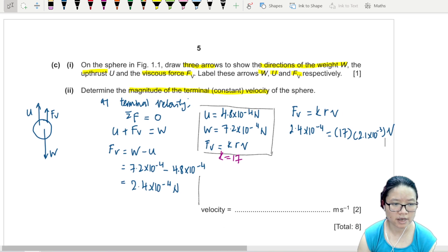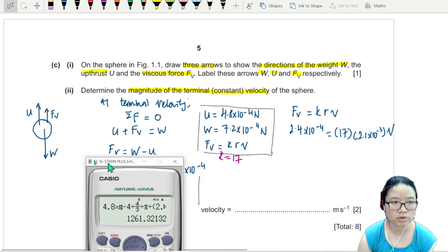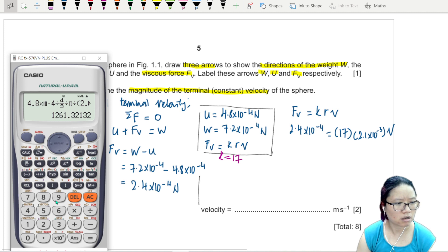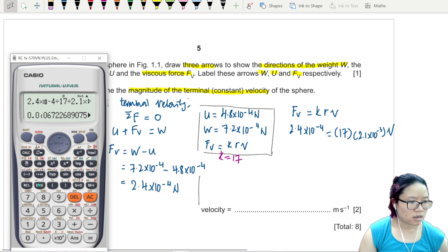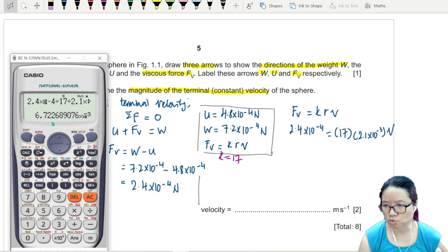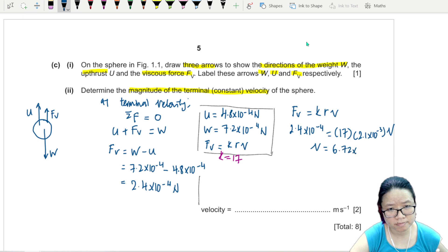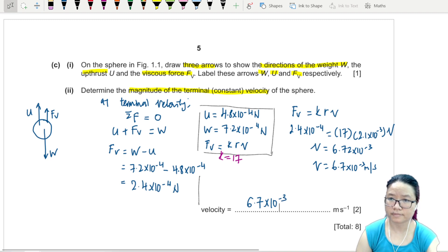We'll pull out our calculator and divide these two values. 2.4 times 10 to the power of negative 4 divided by 17 divided by 2.1 times 10 to the power of negative 3. This will give me 6.72 times 10 to the power of negative 3. As usual, I'll write my answers in 2SF: 6.7 times 10 to the power of negative 3 meter per second.